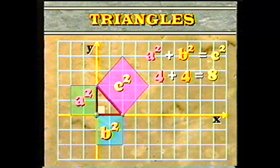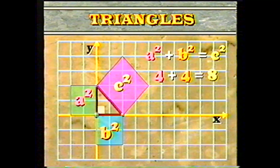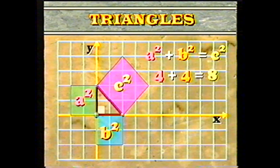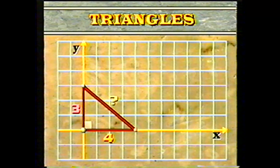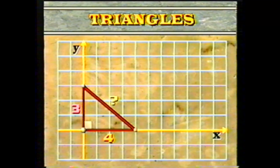You'll see that there are 4 whole squares and another 8 half squares, which add up to 4 more, so the entire area of this square built on the hypotenuse is 8. In our triangle, A squared and B squared are each 4, and C squared is the sum of those two numbers for a total of 8. If you know the lengths of two sides of a right triangle, you can use the Pythagorean theorem to figure out the length of the third side.